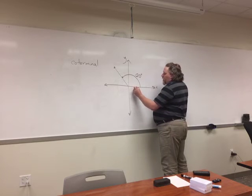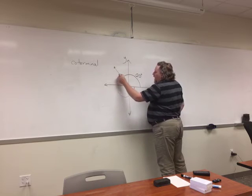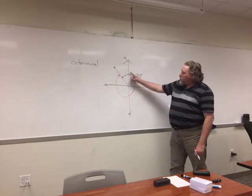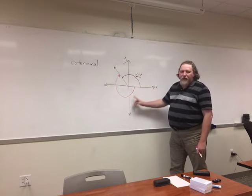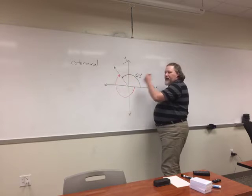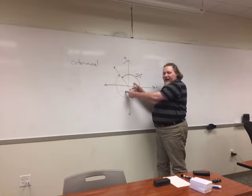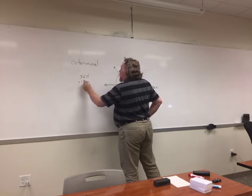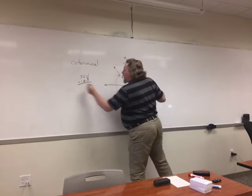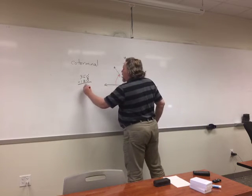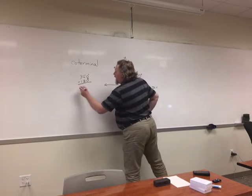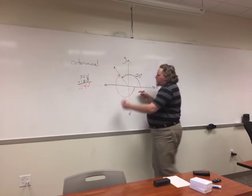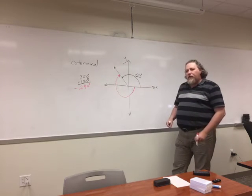One way to find a coterminal angle: start at the same spot and go the negative direction — clockwise — to reach the same terminal side. The black arc and the red arc together make a complete circle. So: 360 degrees minus 120 degrees leaves 240 degrees. Since we're going clockwise, that angle is negative: negative 240 degrees.